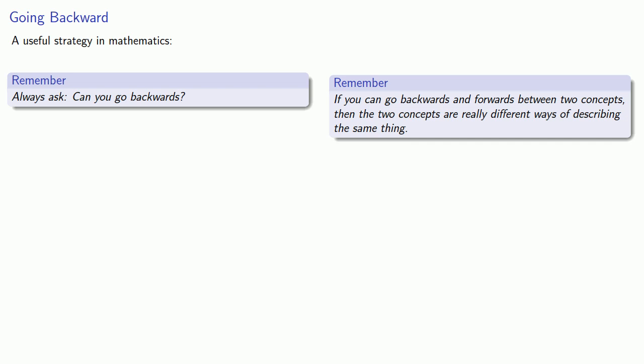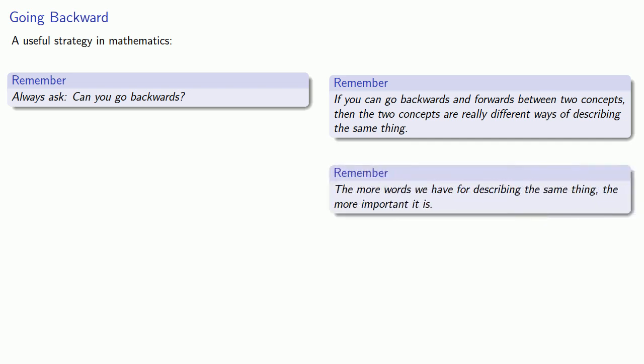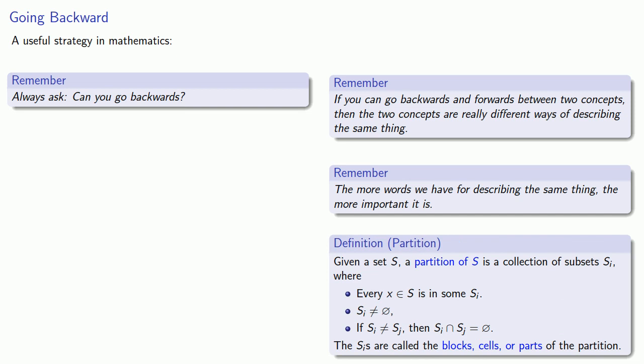And in fact, we can go a little further. The more words we have for describing the same thing, the more important it is. And that's because if something is important, different people will think of it, and they'll give it their own names. So in fact, when we define partition, these subsets were either called blocks, or cells, or parts. And the fact that we use different terms is indicative of the importance of this concept.